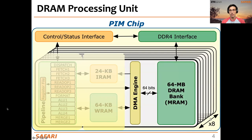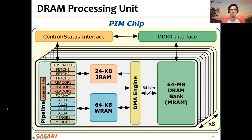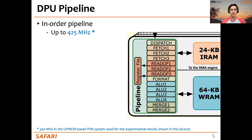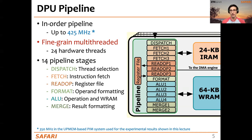In the current generation of UPMEM-based PIM systems, we have eight DRAM banks per chip. The size of these DRAM banks, called MRAM, is 64 megabytes. In order for the pipeline to access this DRAM bank, there is a DMA engine. This way, we can move instructions from the DRAM to the instruction memory, or operands between the DRAM and the scratchpad or WRAM. The pipeline has 14 pipeline stages.